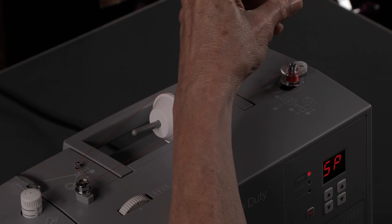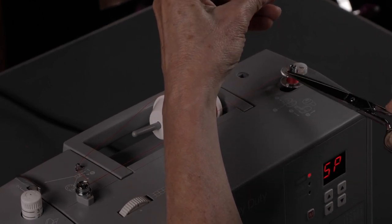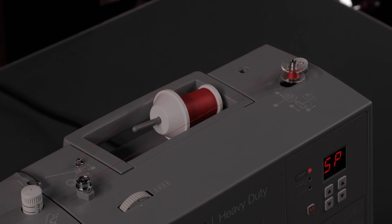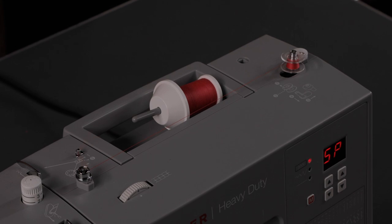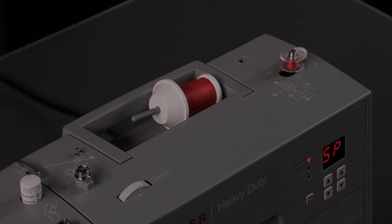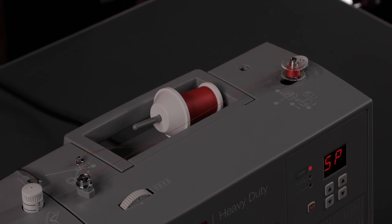After you get a little bit of thread on there, take your scissor and clip this thread close to the bobbin and step on the foot control to resume winding. You can stop when you have enough thread on the bobbin for your project or you can keep winding until it's full. It'll stop automatically when it's full.